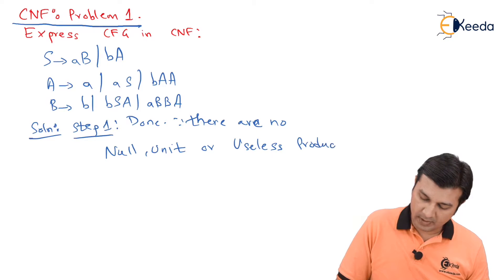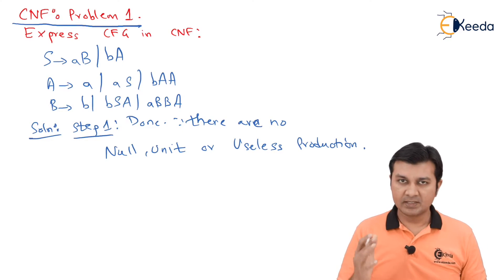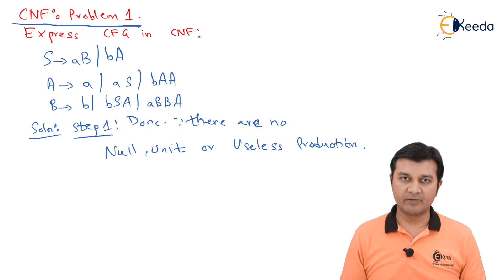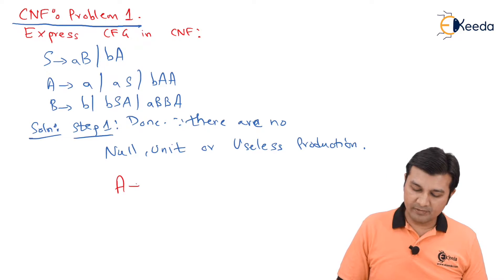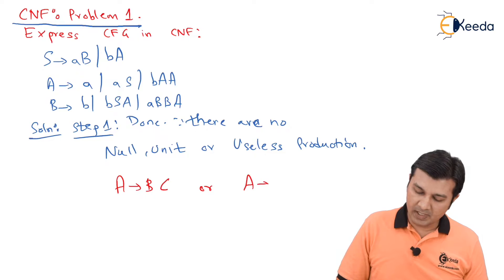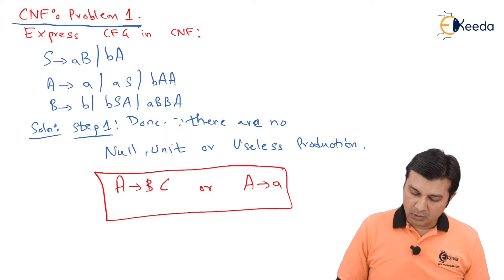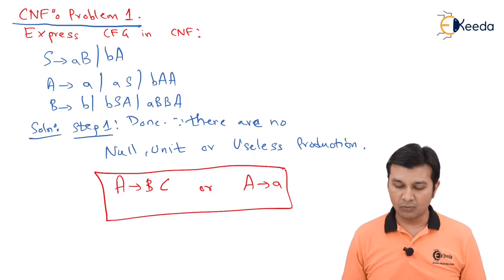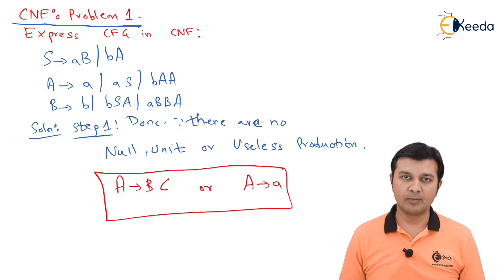Step two says to get it converted to CNF. Remember what CNF requires: a variable giving two variables, or a variable giving a single terminal. So I should be able to convert everything to the form A gives BC, or A gives small a.